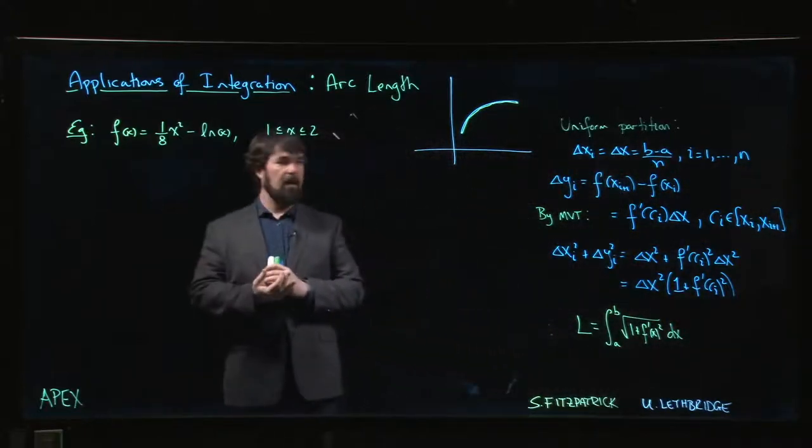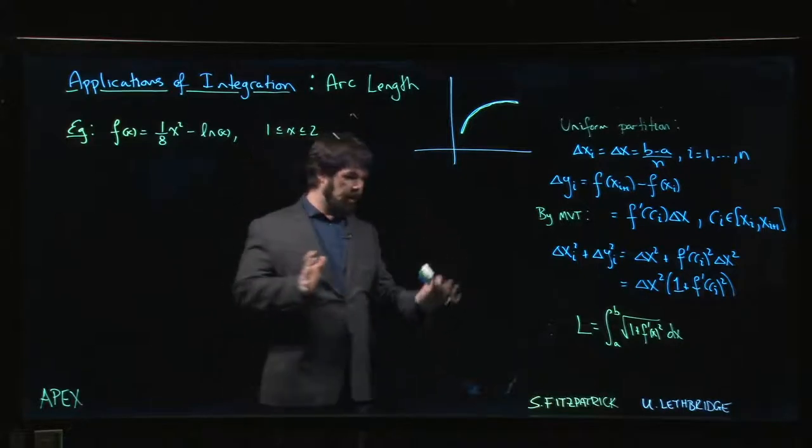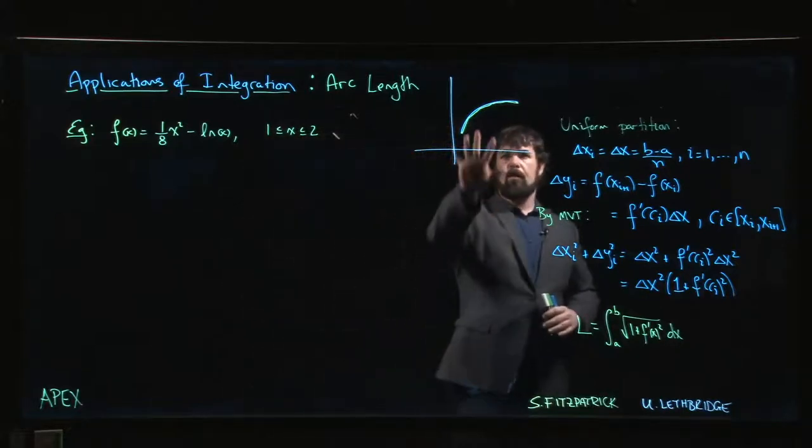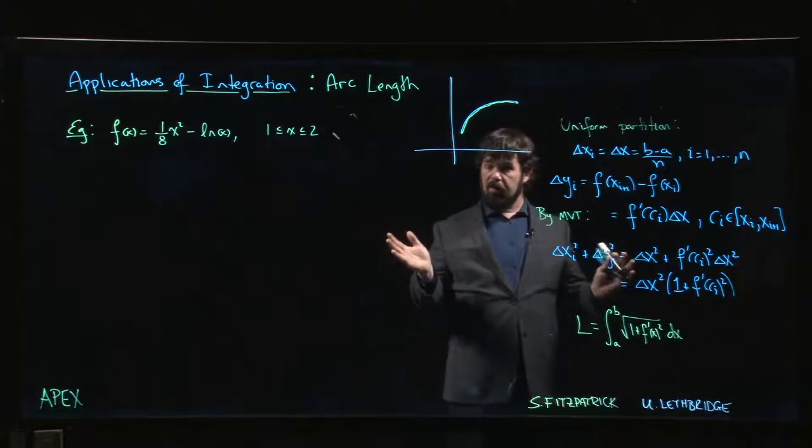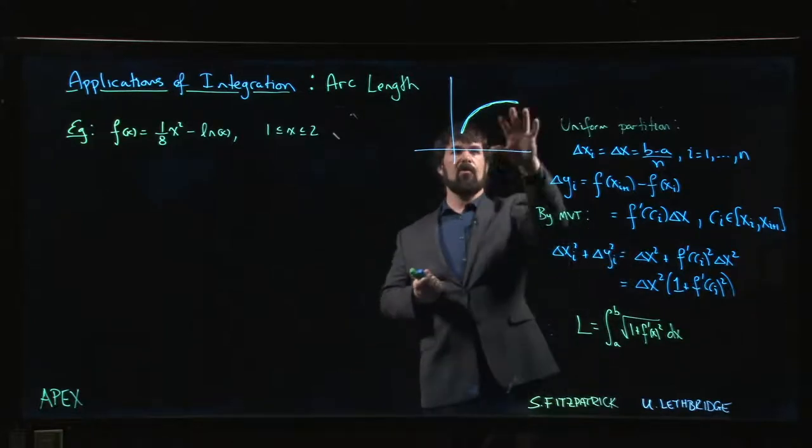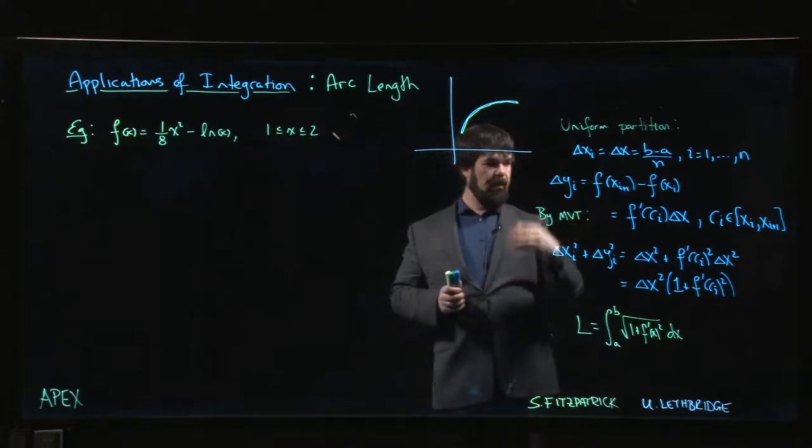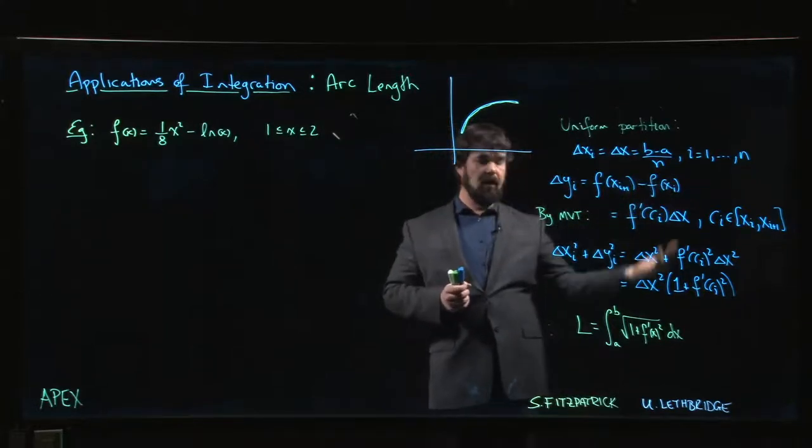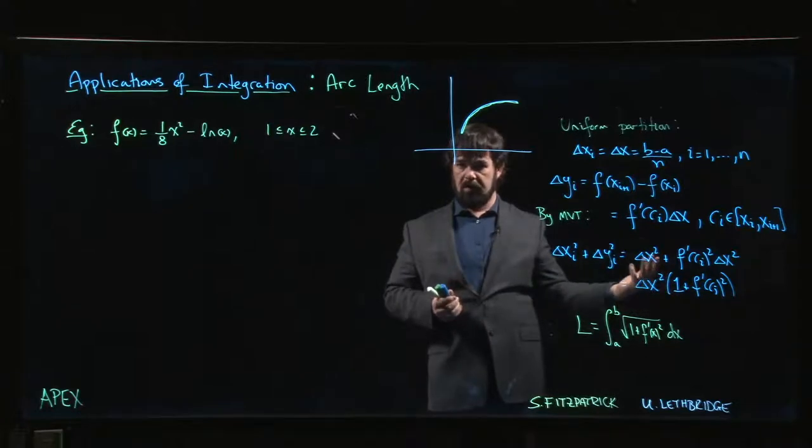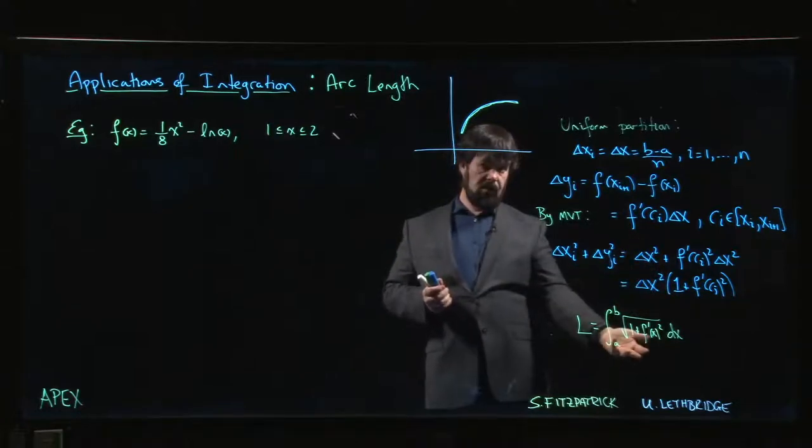Let's look at an example using arc length. Remember the setup here is that we want to calculate the length of some curve. We know how to calculate lengths of straight lines, so what we do is approximate our curve with a bunch of straight line segments. We calculate the length of each segment, add them all up, and recognize that what we're looking at is essentially a Riemann sum.